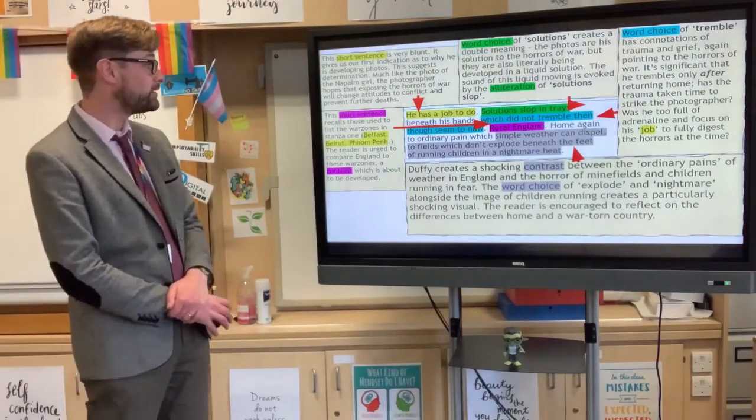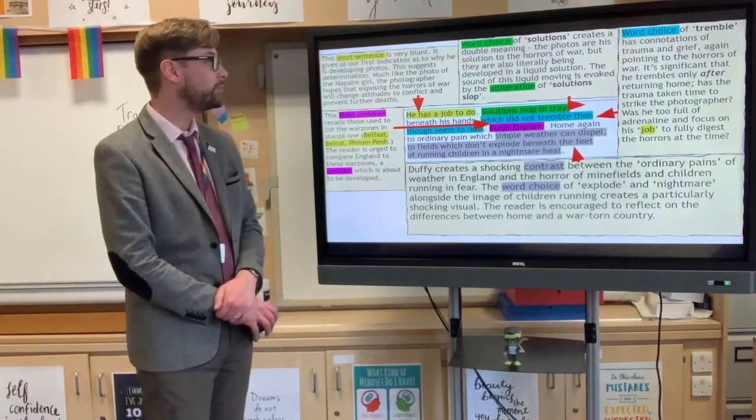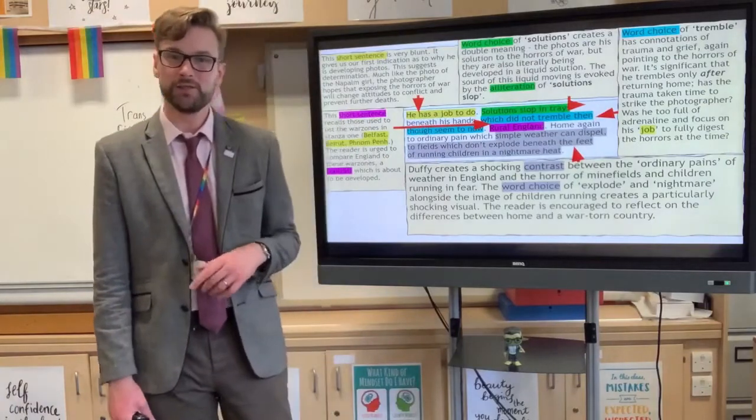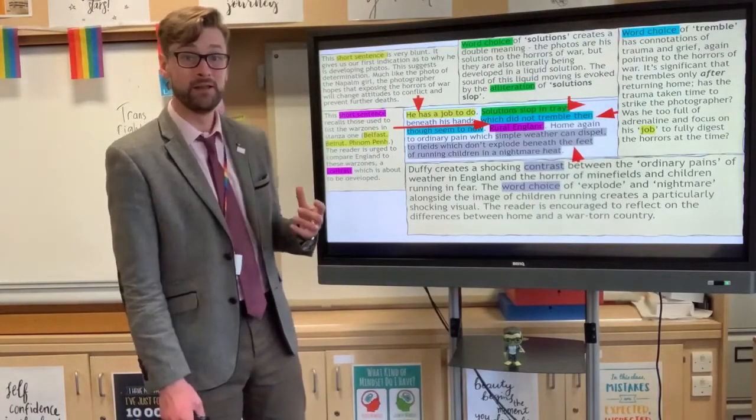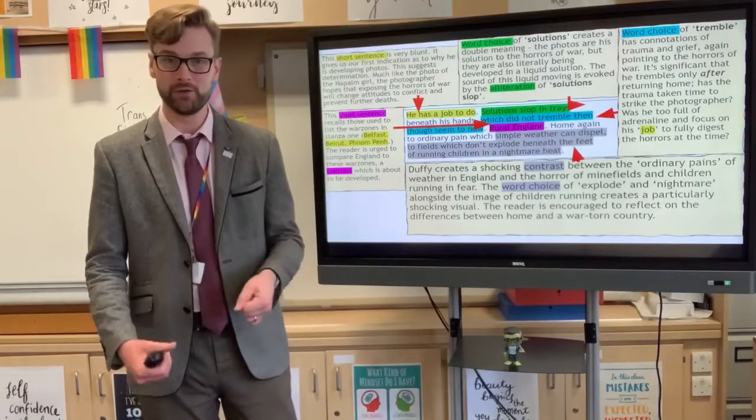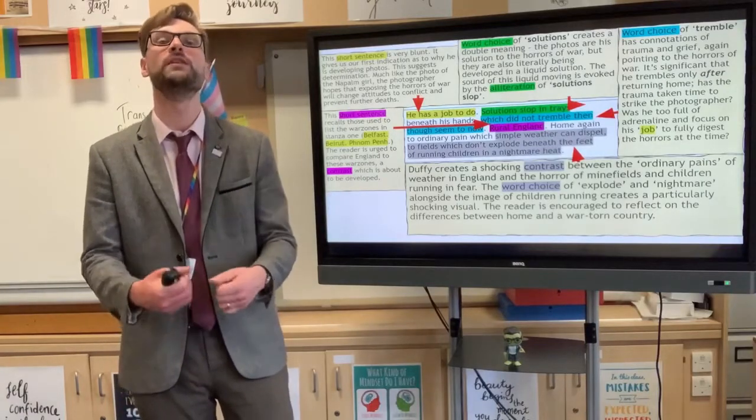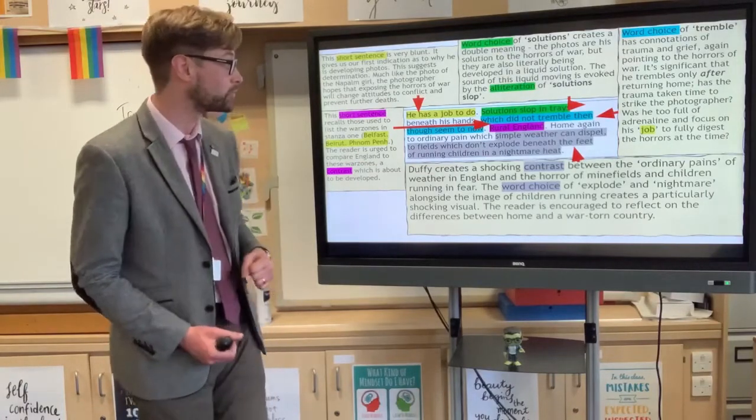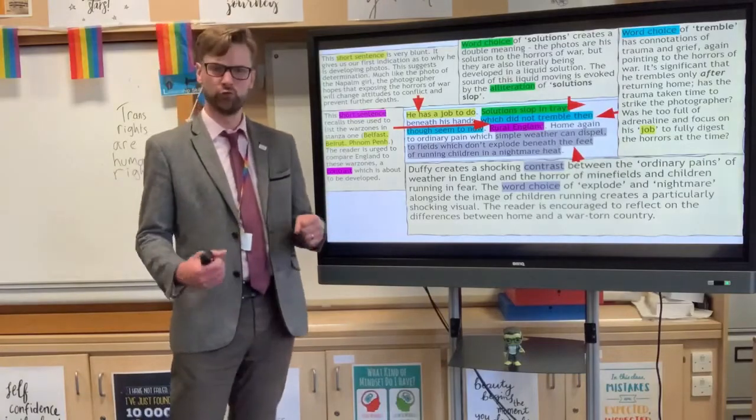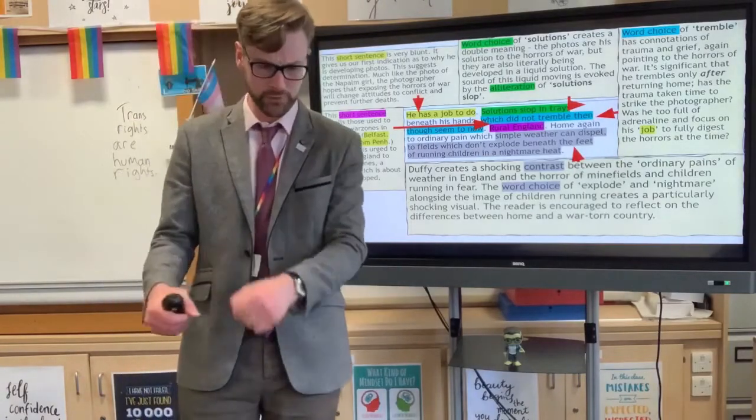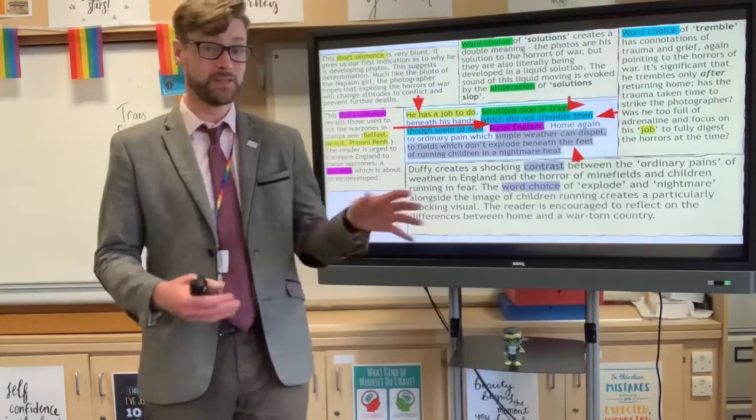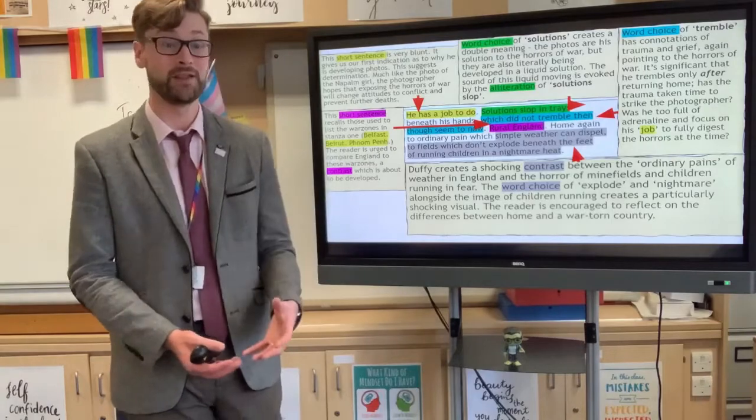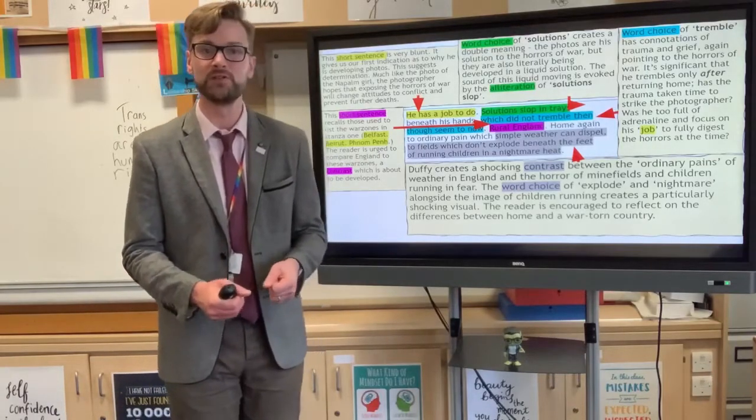Beneath his hands, which did not tremble then, though seem to now. Just look at that word choice of tremble. This tells us clearly that he is traumatized. He's traumatized and it's only maybe really hitting him now as he's being forced to recall these images and where he took them. And this is an idea which gets developed further on in the poem for sure. But we now get to see the sense that this guy is not a robot. He's not this mechanical machine who can just develop the photographs and not be affected by it. If he didn't feel any shock and trauma at the time, now that he's being asked to recall it, he's certainly feeling it now. His hands are trembling as he's doing it, suggesting trauma.